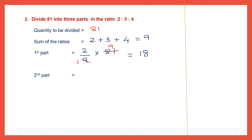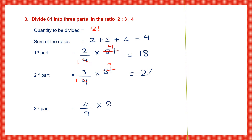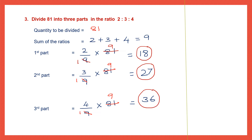Second part: take the second term 3, divided by the sum of the ratios, multiplied by 81. Cancel: 9 nines are 81, and 9 threes are 27. The second part is 27. Third part: take the third term 4, divided by 9, multiplied by 81. Cancel: 9 nines are 81, and 9 fours are 36. We've got three parts — the first part is 18, the second part is 27, and the third part is 36.